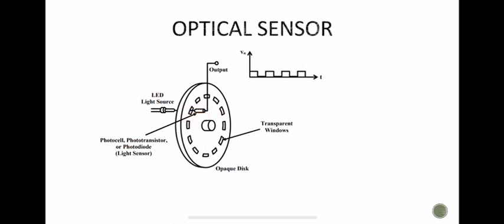After signal conditioning, the output is a square wave of pulses whose frequency is determined by the rotation speed and the number of holes in the disk. The frequency depends on the shaft rotation speed and the number of perforations. By measuring this frequency, we can determine the speed using optical sensors and photoelectric tachometers.